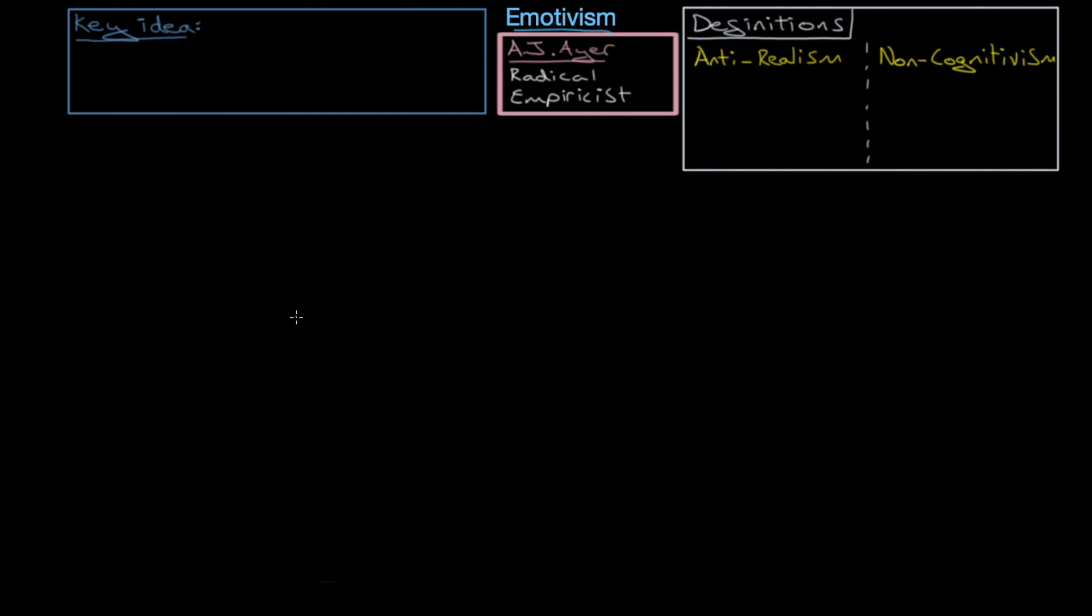So, the key idea of A.J. Ayer's here in emotivism is that moral statements, like arson is wrong, are really just and only expressions of emotion.